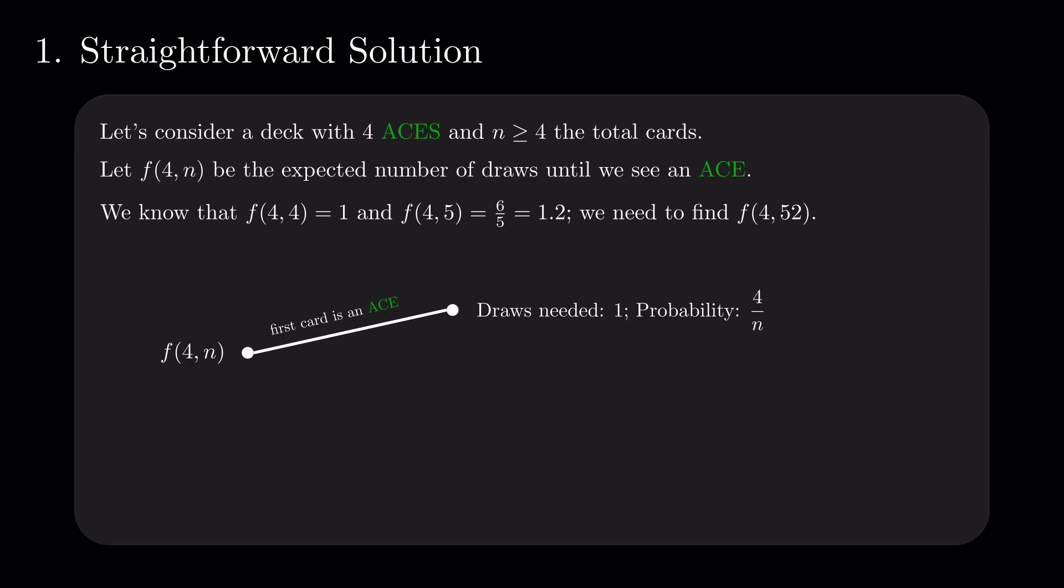Or the first card is not an ace, meaning that we drew one card, and we expect to have to draw f of 4 and n minus 1 more, given that the deck decreased by one card. This happens with probability n minus 4 divided by n.